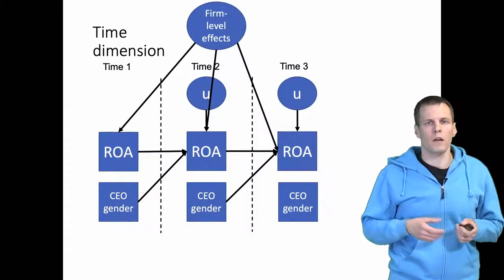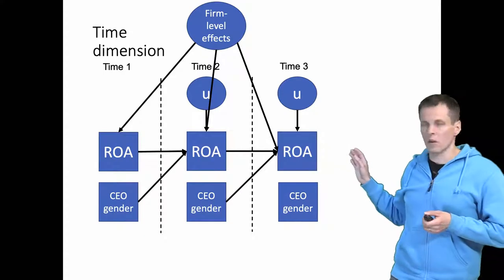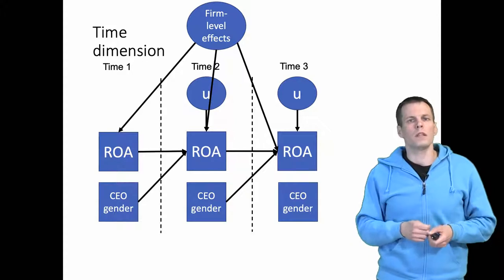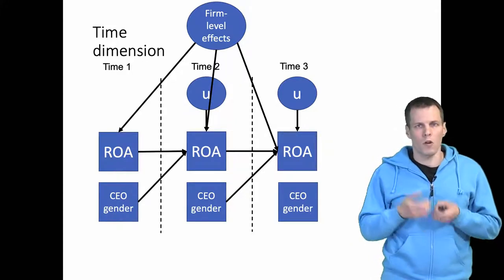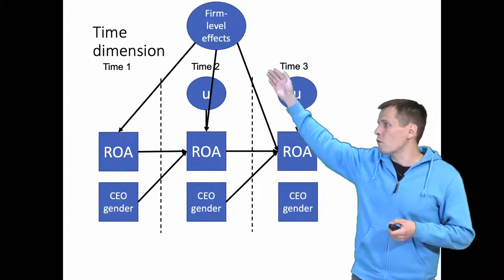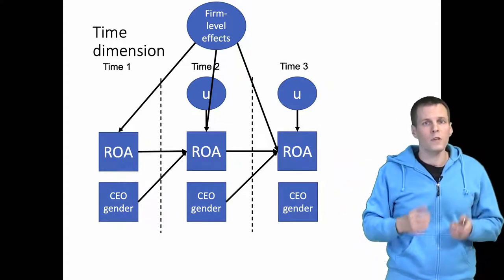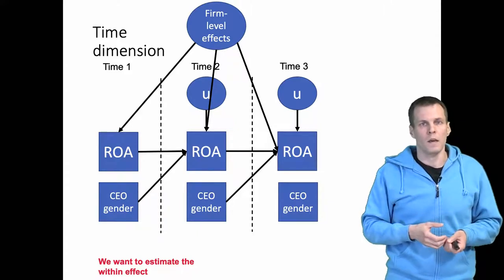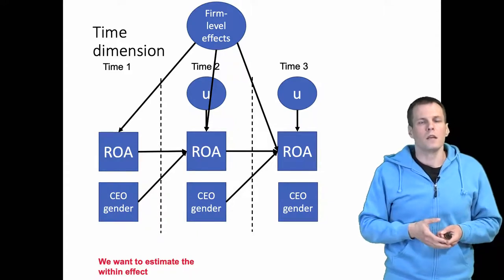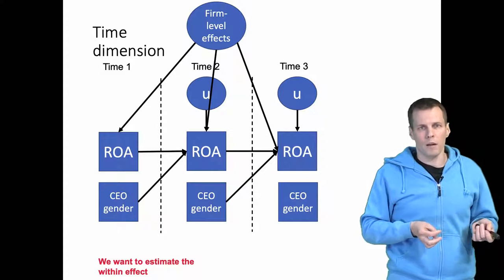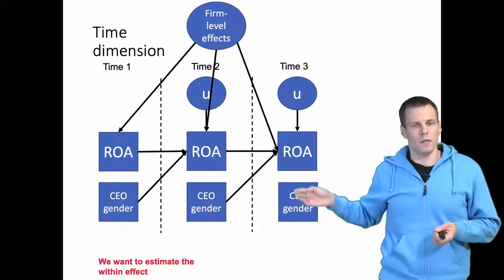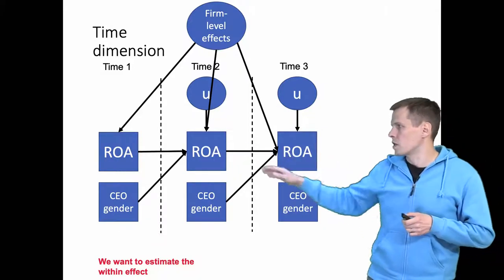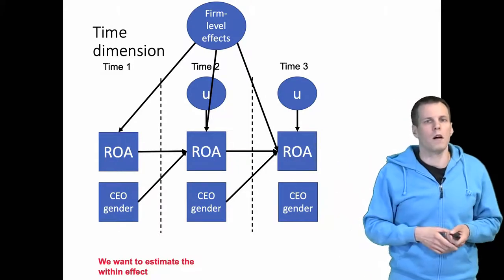I'll use the model I've used before as a starting point. We have a longitudinal panel with measures of ROA and measures of CEO gender. We want to estimate the causal effect of CEO gender on ROA and control for unobserved individual effects. We want to estimate the within effect, which is what the Arellano-Bond estimation technique does. This differs from a cross-lagged model in that there is only one dependent variable, whereas in a cross-lagged model we would have ROA and CEO gender. Otherwise these are very similar models.